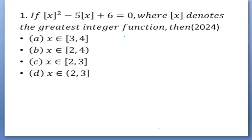The first question goes like this: the greatest integer function [x]² minus 5 times [x] plus 6 is equal to 0, where the box notation denotes the greatest integer function. We have to find the values of x for which this equation is true. The options are: x belongs to the closed interval [3,4]; open interval (2,4); closed interval [2,3]; and open interval (2,3) with 2 excluded. Let us try and solve this question.